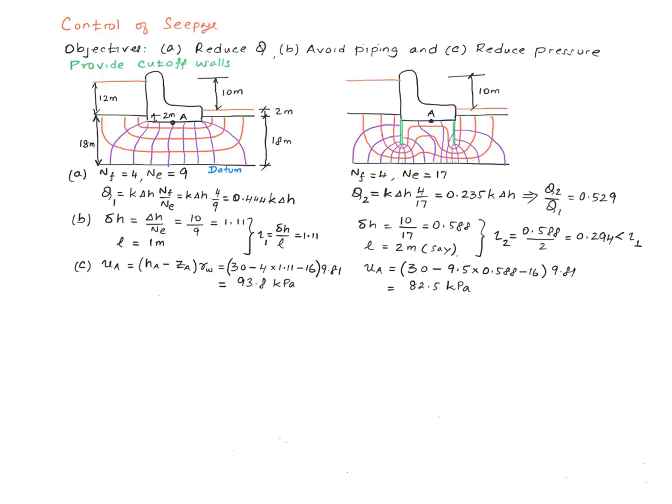I also calculated the pore pressure at this point, which is in the middle of the base of the dam, and it is 93.8 kPa here, 82.5 kPa over here. It is a little smaller, but not drastically smaller. So the primary benefits are over here. The quantity of seepage is cut down, and the hydraulic gradient in the toe-down is cut down significantly.